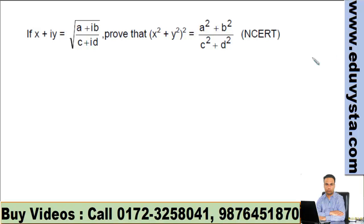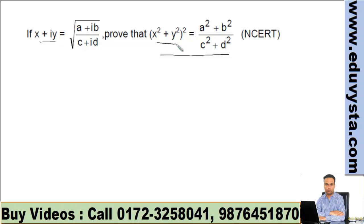For this question, which is in the NCERT book: if x + iy = √((a + ib)/(c + id)), then prove this result. Straightaway, this is an equation about modulus, because we have x + iy and we have to find x² + y².